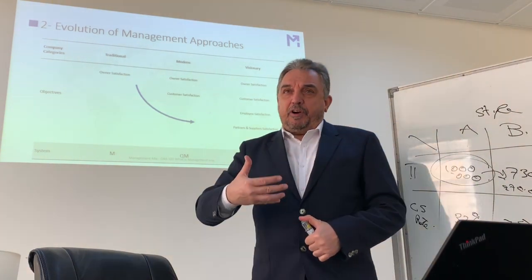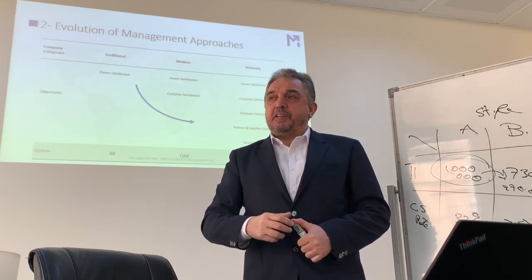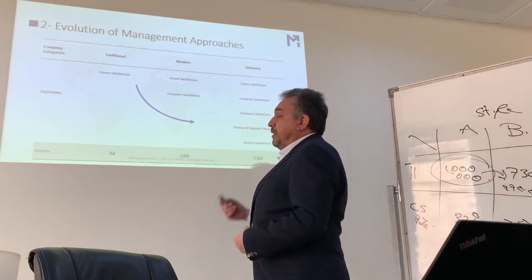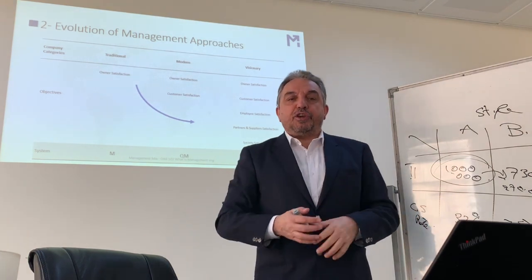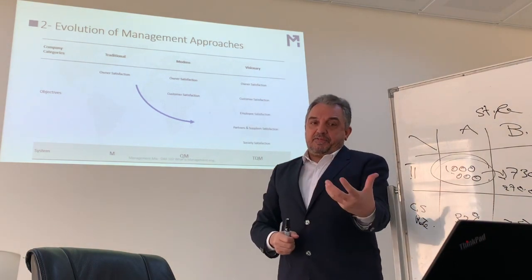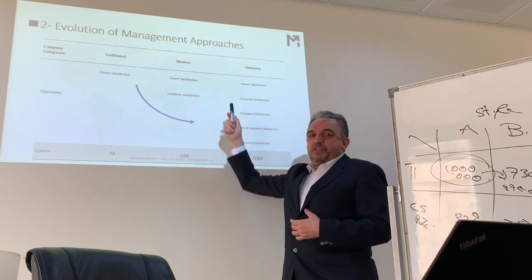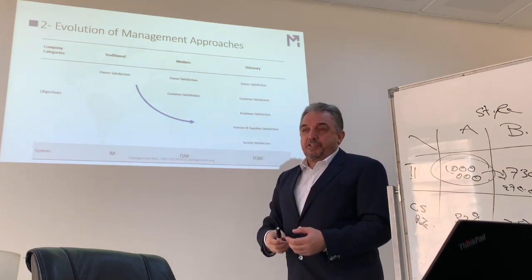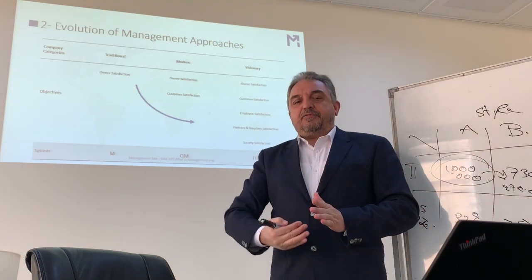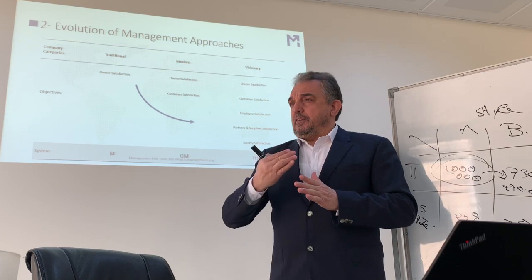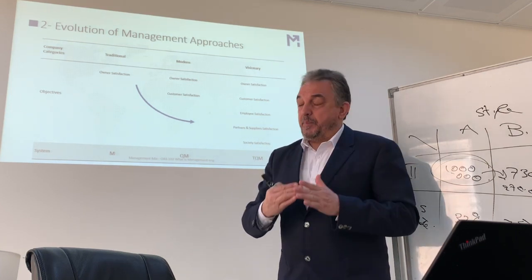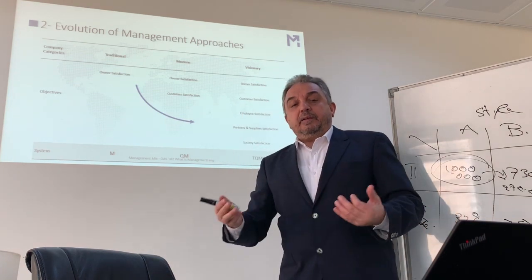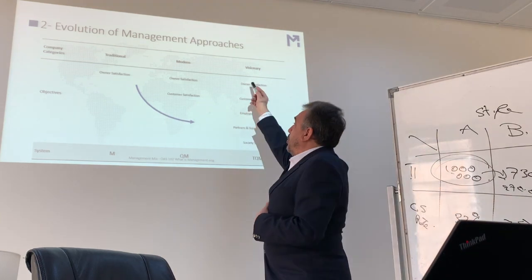A new category of management thinking arose in the last 30 to 40 years — we call them visionary leaders. Their management style takes into consideration the owner's satisfaction, but also gives important weight to employee satisfaction. Managers should be satisfied in order to continue the development of the organization on a sustainable basis. Then we also have partners, suppliers, and society satisfaction — for example through CSR. We call these groups the stakeholders of the organization.